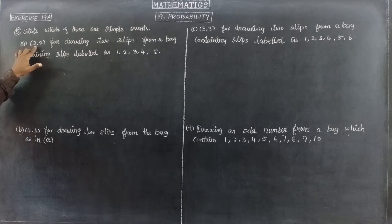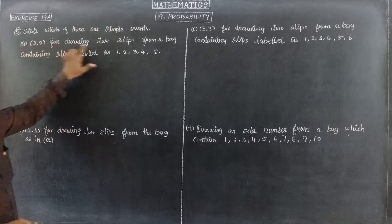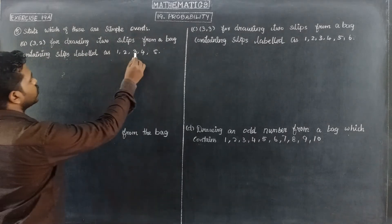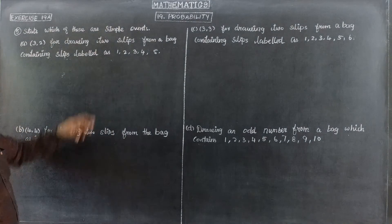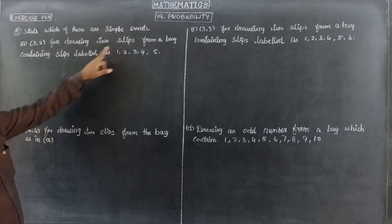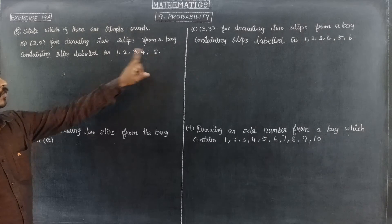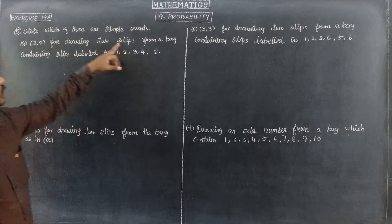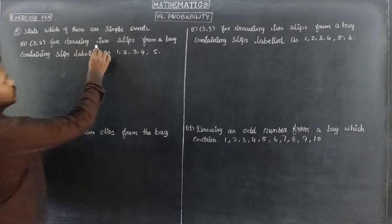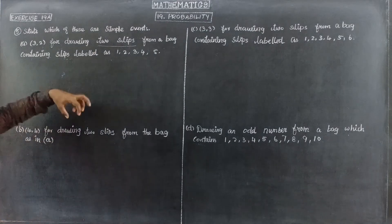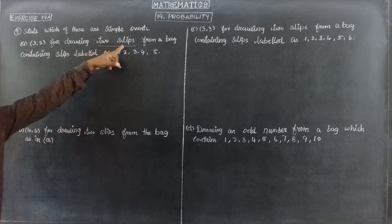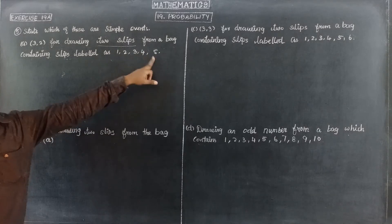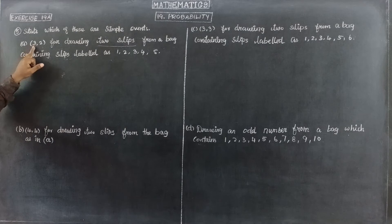Subdivision 3,2 for drawing 2 slips from a bag containing slips labelled as 1, 2, 3, 4, 5. The papers are in the bag, so we are taking 2 slips out from the bag. The total number of labels in the bag is 5, so the number is 3,2.